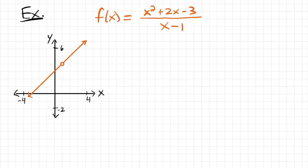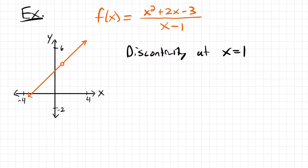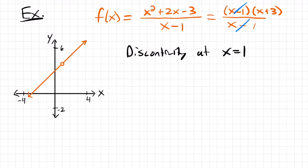For our next example, we have the function (x² + 2x − 3) / (x − 1). As we can see on the graph, we have a hole at x equals 1, which can also be seen from our function: if we plug in 1, we get 1 minus 1 on the bottom, which equals 0 — an undefined value. So we know we have a discontinuity at x equals 1. But is it removable or non-removable? If we factor the numerator, we get (x − 1)(x + 3) over (x − 1). The two (x − 1) terms cancel, leaving us with x + 3. So we were actually able to redefine our function to remove the discontinuity, meaning x equals 1 is a removable discontinuity.